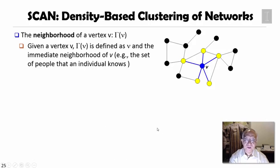We introduce an algorithm called SCAN, which is density-based clustering of networks. We first see how SCAN defines the neighborhood of vertex. The neighborhood of vertex V is essentially defined as V itself and its direct neighbors connected using social links.